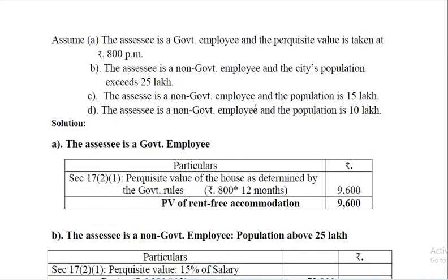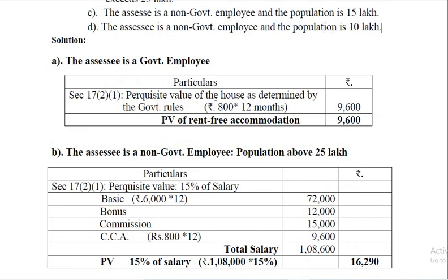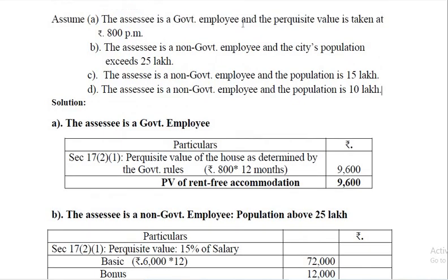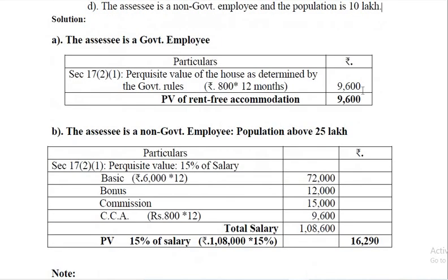In case C, the employee is a non-government employee and the population is 15 lakh. If the population is more than 10 lakh but not more than 25 lakh, the perquisite value is 10% of the salary. If the population does not exceed 10 lakh, then 7.5% of the salary of the non-government employee is taken as the perquisite value. The government employee case gives ₹9,600.